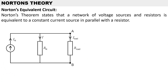For Norton's theorem, we can replace an electric circuit with Norton's equivalent circuit. Norton's theorem states that a network of voltage sources and resistors is equivalent to a single current source in parallel with a resistor. As shown in this diagram, we have a single current source replacing the voltage sources, and a single resistor known as Norton's resistance, which can replace all the resistors in the circuit, connected in parallel to a load resistor.